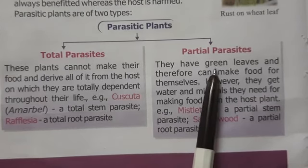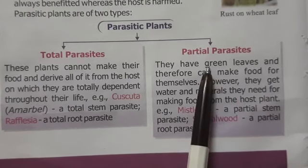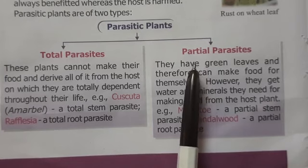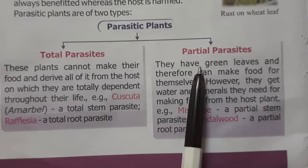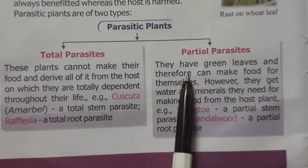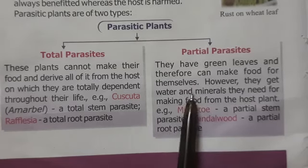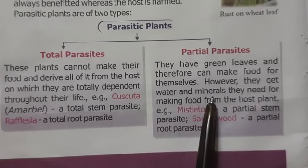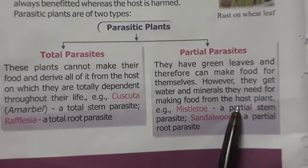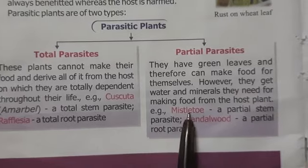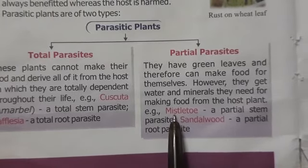Then we have partial parasites. As the name indicates, partial parasites are green in color, so they can make their own food. But they take water and minerals from the host plant. The example is mistletoe, which is a partial stem parasite.